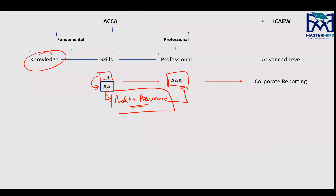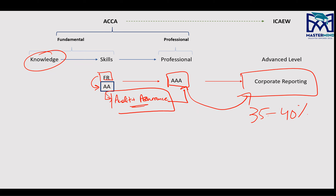If you opt for AAA — because at the professional level, Advanced Audit and Assurance is an option — this will help you get exemptions for your ICAW. Just like Corporate Reporting at the advanced level in ICAW, AAA forms approximately 35 to 40% of that paper. I've been teaching AA for the last four years, and Corporate Reporting advanced level for the last six years.